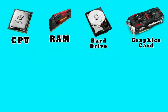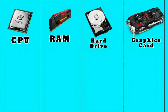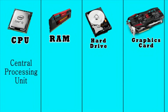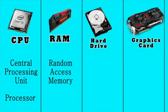We can see the CPU, RAM, hard disk, and graphics card. We can see the CPU — full abbreviation. CPU means Central Processing Unit. We can see the processor and the memory.